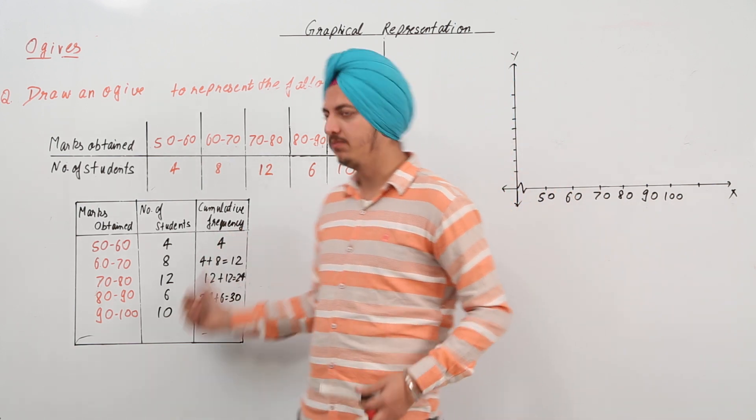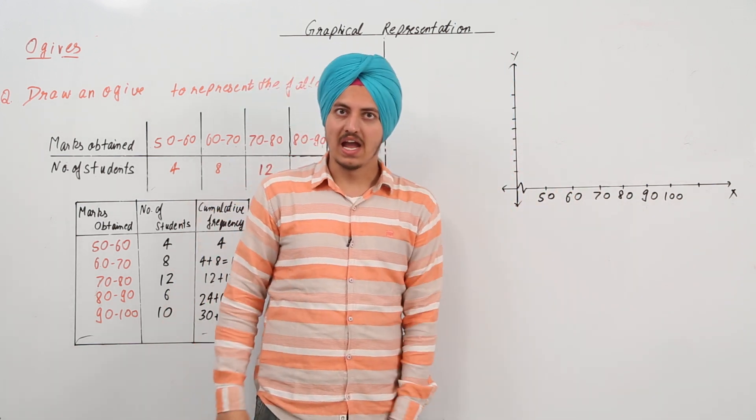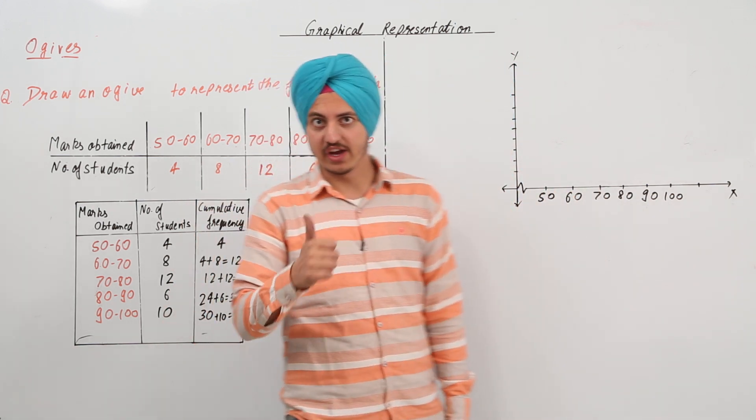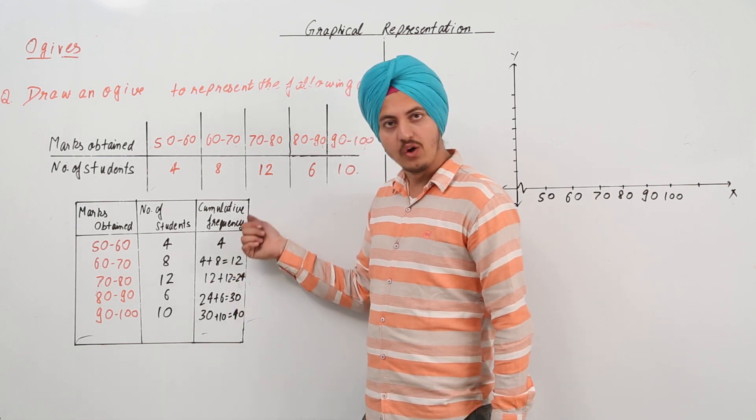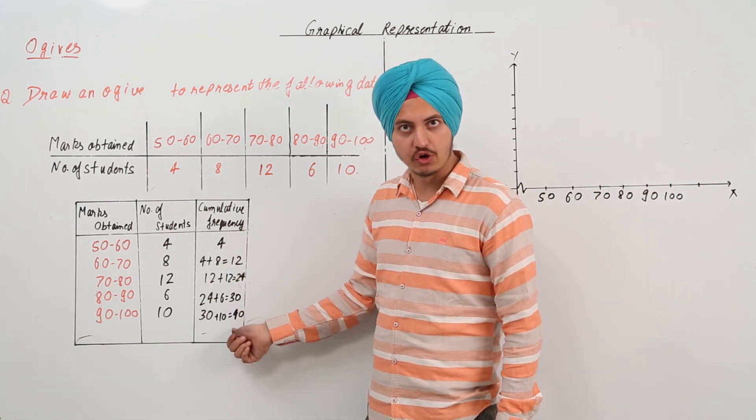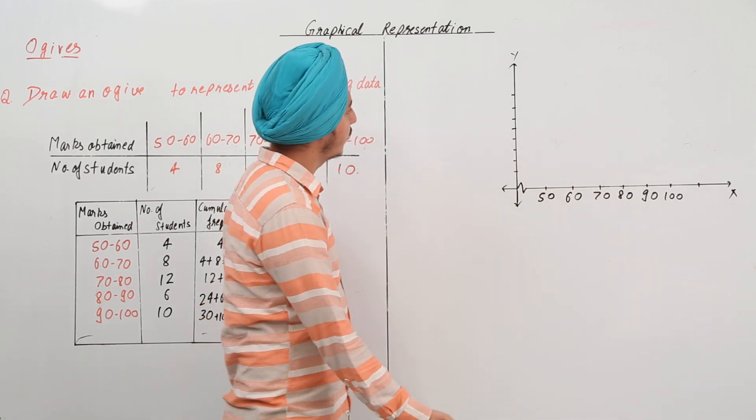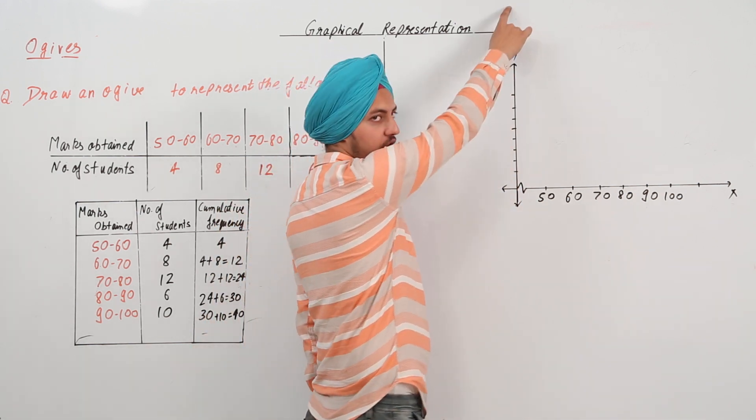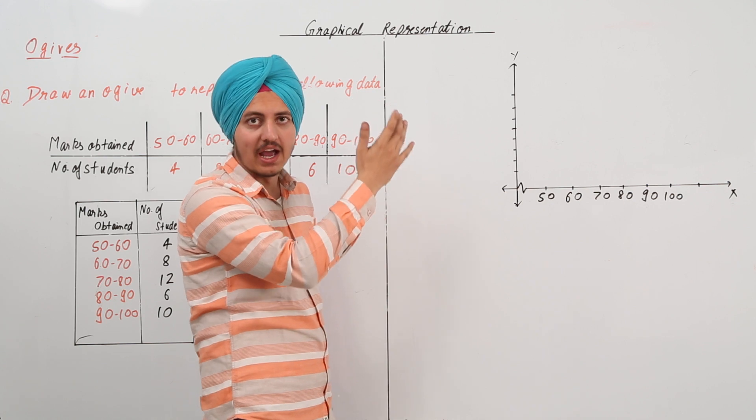Now, we have marked from 50 to 100 and on the y-axis we have to go from 4 till 40. So, either what we can do is we can do 1, 2, 3, 4 till 40 but that will be again very high.